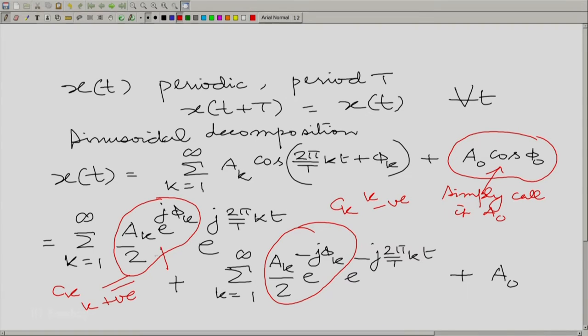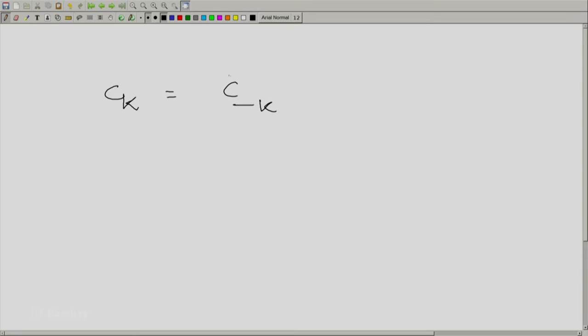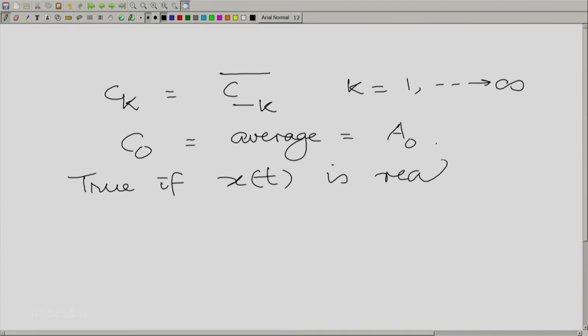If you look at this, take the corresponding k here, here and here. If you take the corresponding k, you have complex conjugates there. We will write this down formally. c_k is equal to c minus k complex conjugate for k going from 1 towards infinity. And c_0 is real and in fact, it is essentially an average and that is equal to a_0 actually. This is true if x(t) is real and that is what we have assumed when we made a sinusoidal decomposition.